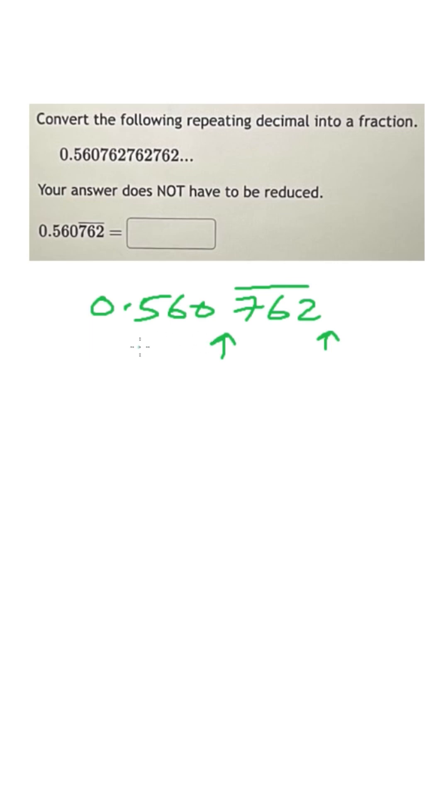This number is 0.560, then 762, 762, 762, it's repeating. So to bring the point here, we have to multiply it by 1000, and to bring point here, we have to multiply it by 1 million.